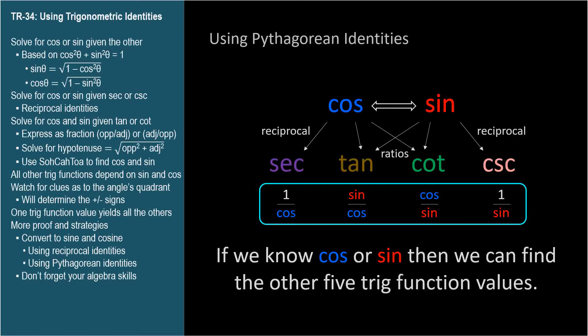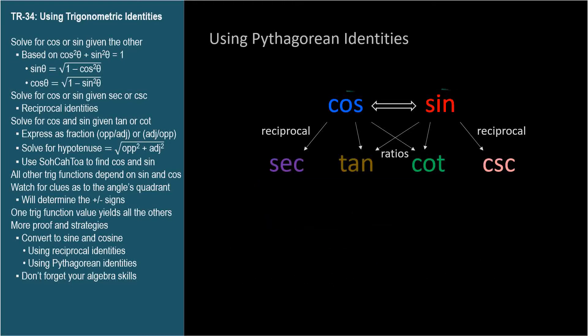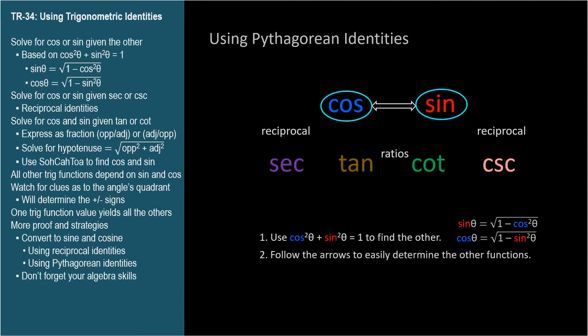Let's step through these a pair at a time. So if given cosine or sine, we can find the other with the Pythagorean theorem, specifically with either of these two equations where the Pythagorean theorem is expressed in terms of either cosine or sine. From there, follow the arrows to determine the other function values.